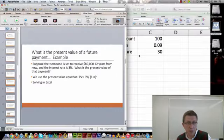So, let's go through an example. Suppose someone is set to receive $80,000 12 years from now. The interest rate, 3%, just kind of pulling that out of thin air. It could be whatever interest rate you'd like to put in there. What's the present value of this payment? Well, we just have to plug into our formula here. We know that present value equals future value divided by 1 plus r to the nth power. Let's open up Microsoft Excel and figure out what the present value is of this $80,000 payment that will be received 12 years from now.